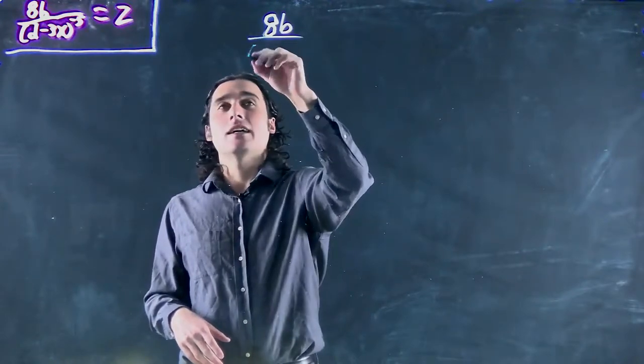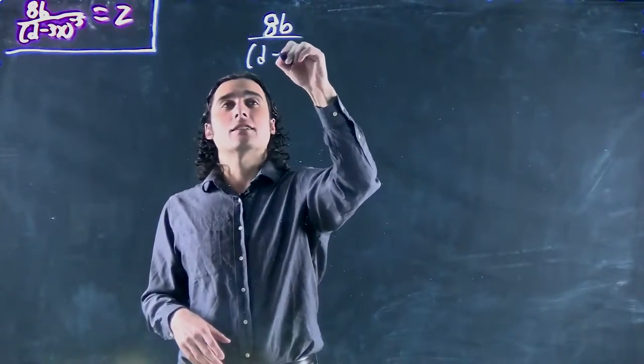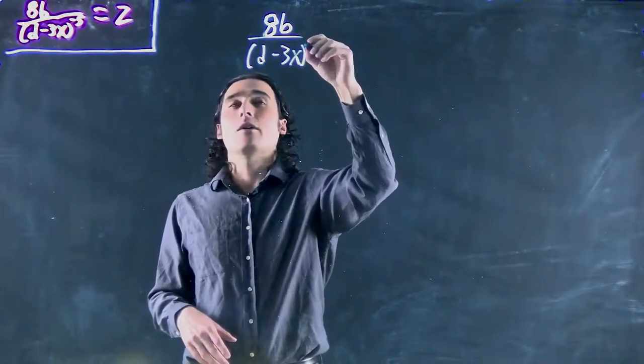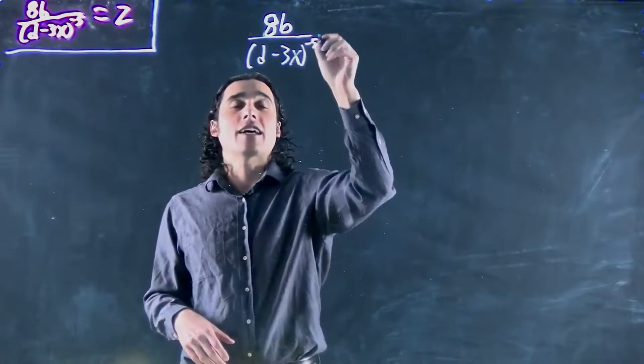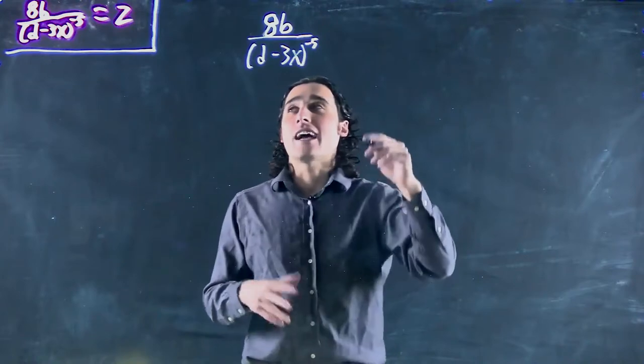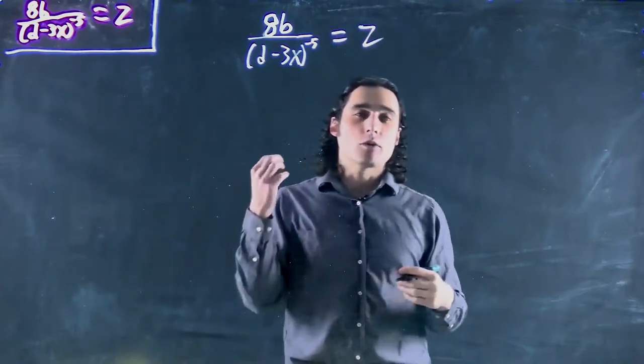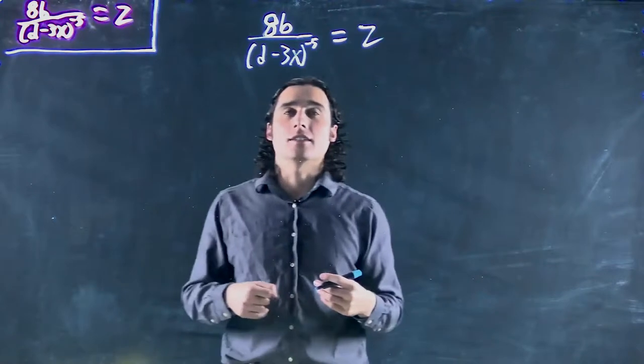And that's being divided by (d - 3x) to the power of minus 5. So all of that's underneath 8b, and that entire thing is equal to z. We're wanting to solve for x in this case.